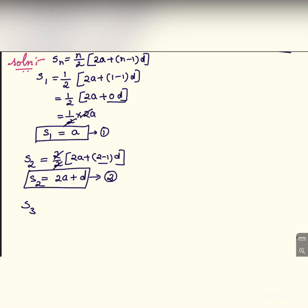Now s3. s3 will be equal to 3 by 2 into 2a plus 3 minus 1 into d. Therefore, that will be equal to 3 by 2 into 2a plus 2d. 3 minus 1 is 2. 3 by 2 into 2 is common here.